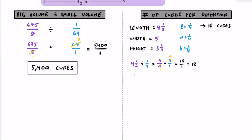Moving on to the width, we know the width is going to be 5 inches, so 5 is just 5 over 1. We're going to see how many quarters fit inside of that by dividing by one quarter — same strategy, multiply by the reciprocal 4 over 1. Since there's nothing to cross cancel, 5 times 4 is going to be 20, and 1 times 1 is 1. So we know that we can fit 20 cubes in the width.